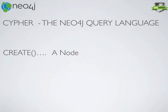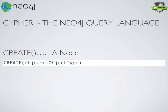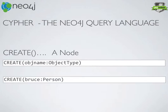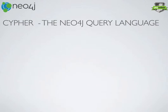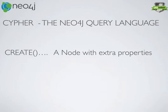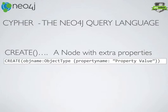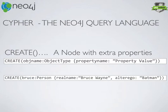A couple of fairly basic ones to get us started. To create a node — it's a bit like creating a row — we just use the CREATE function. You can CREATE an object name with a colon and object type. For example, you might create 'bruce' where Bruce is of type 'person'. We can then add extra properties using curly bracket notation — a comma-separated list. So Bruce is a person with real name 'Bruce Wayne', alter ego 'Batman', and any other properties we want.